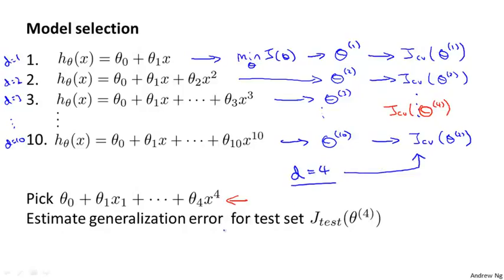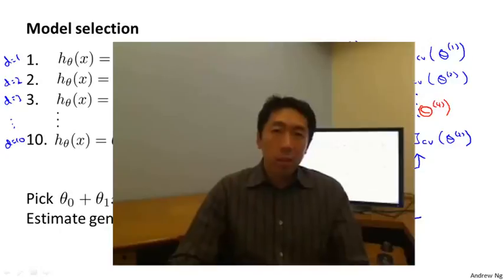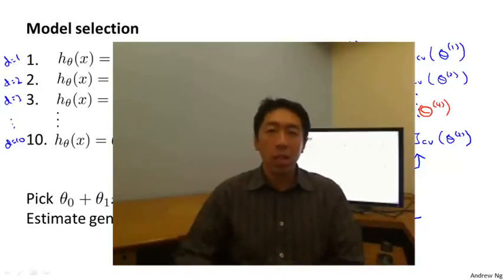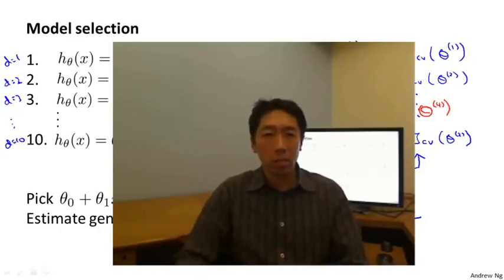Since the degree parameter d is no longer fit to the test set, we've saved the test set and can now use it to measure or estimate the generalization error of the model selected by this algorithm. That was model selection: split data into train, validation, and test sets; use cross validation data to select the model; and evaluate it on the test set.